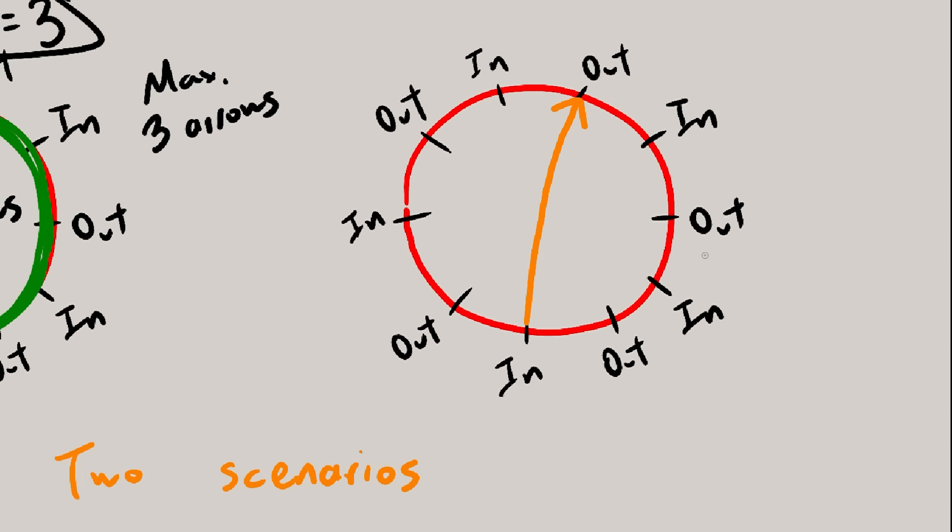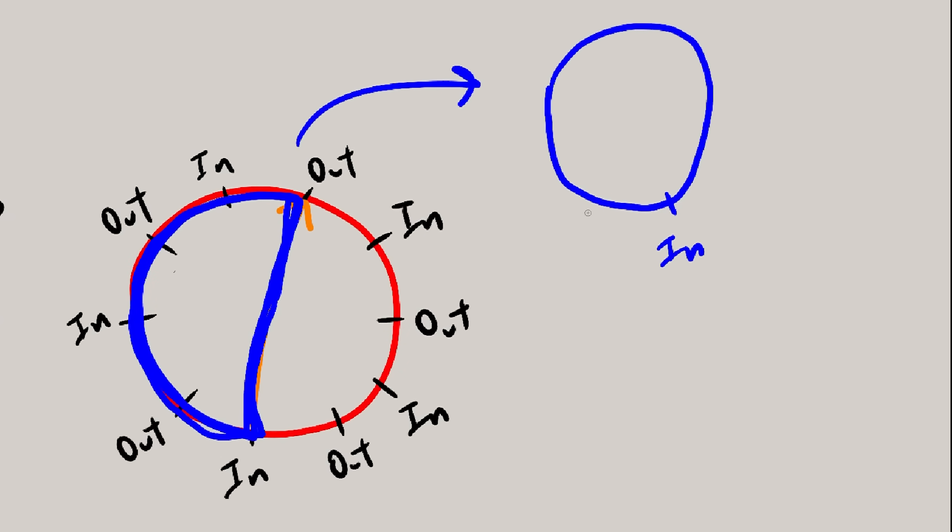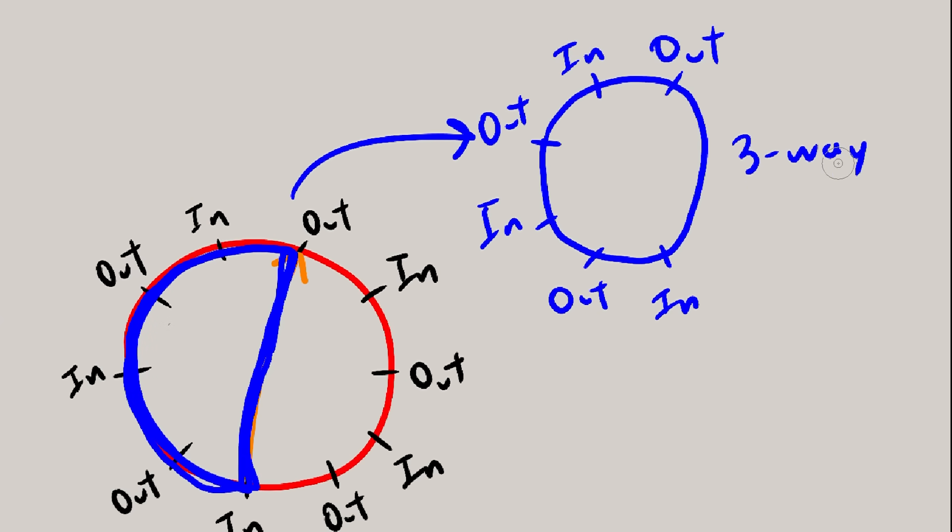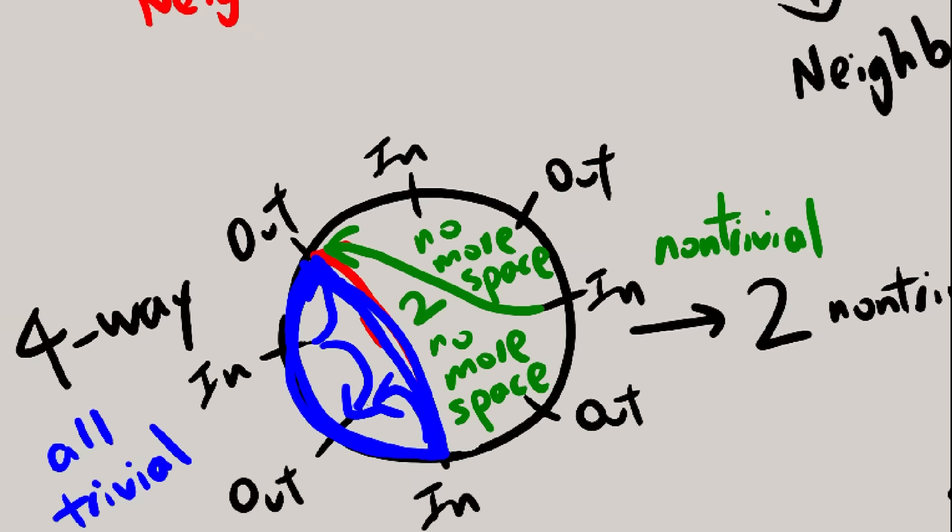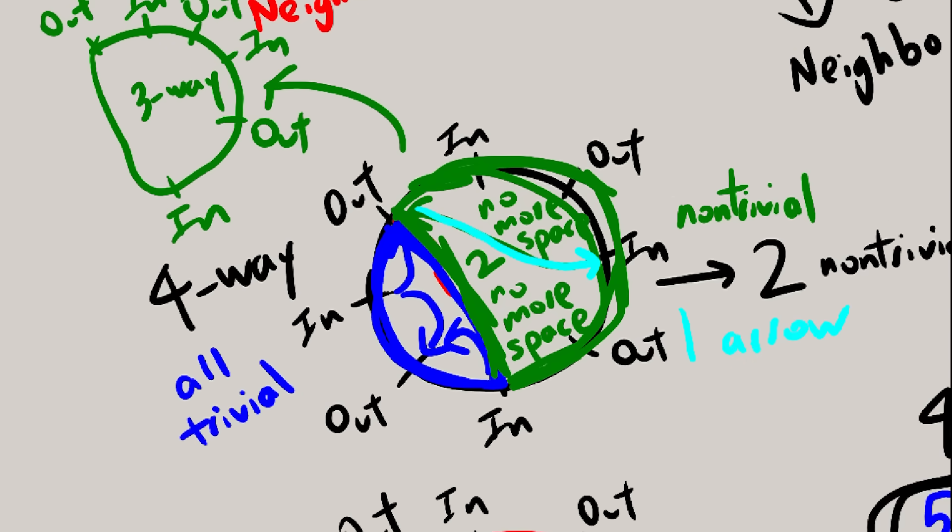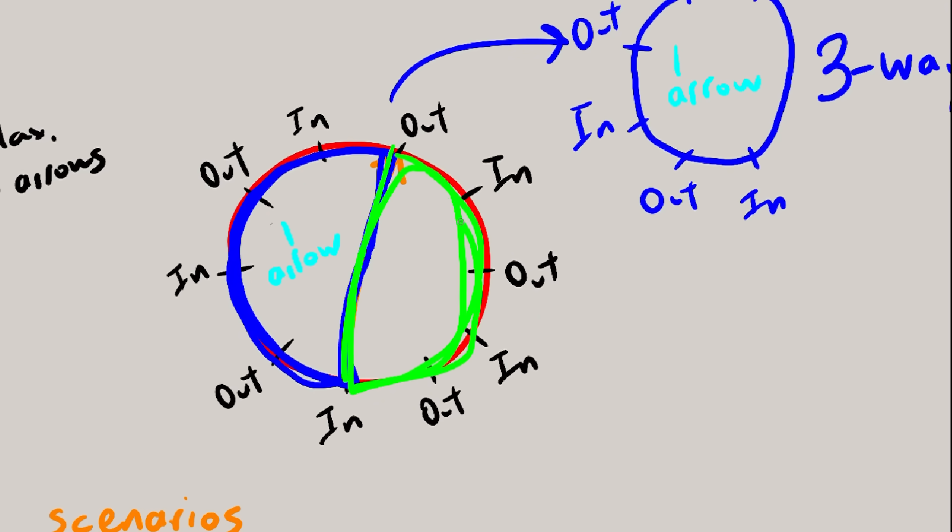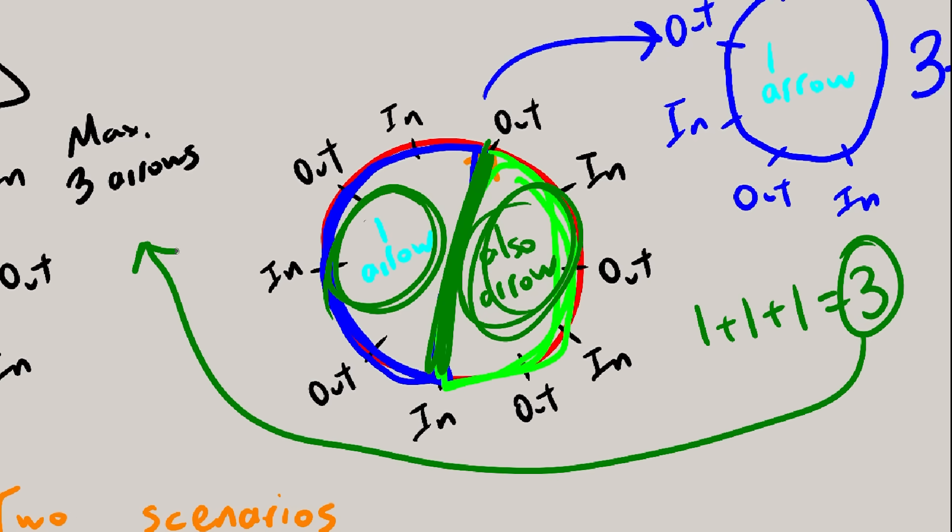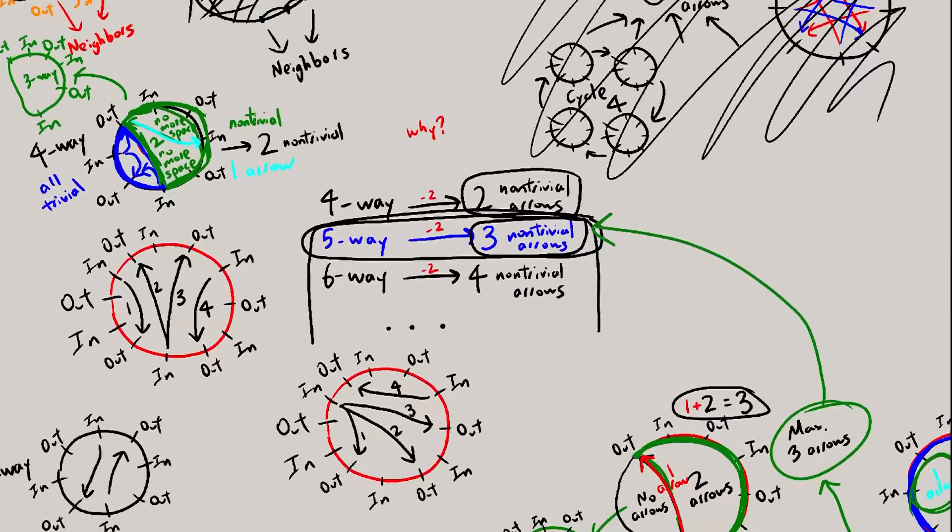Oh, and we have another scenario to deal with. And now, sadly, we can't do the same trick. We haven't seen these before. Or have we? This is a 3-way intersection. Oh, but we haven't done 3-way intersections yet. Yes, we have! It was included in the 4-way intersection. We had a 3-way right here, and we figured out that 3-ways have maximum 1 non-trivial arrow. So, now we have 1 plus 1 plus 1 equals a maximum of 3 non-trivial arrows for the 5-way. Both scenarios are done, proof is now complete for 5-way.